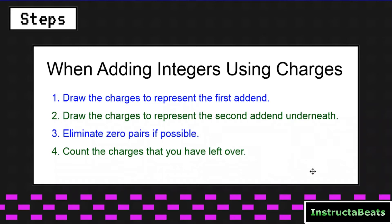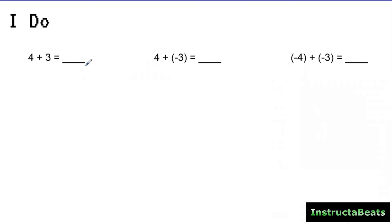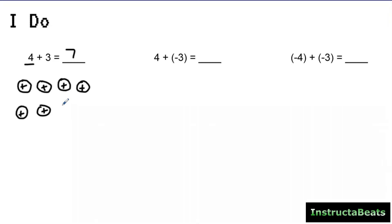Let's take a look at these steps in action. I have three different adding integer problems. Obviously we know four plus three is seven. My first addend is four, so I'm going to draw four positive charges. Then underneath, I'm adding a positive three, so I add three positive charges underneath. My next step is to eliminate any zero pairs — but all of these are positive, so I can't eliminate anything. I have seven positive counters left over, which means my answer is positive seven.